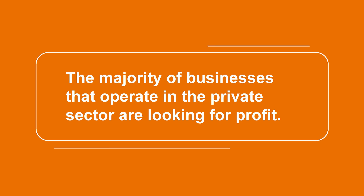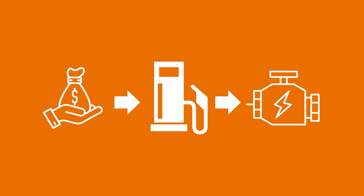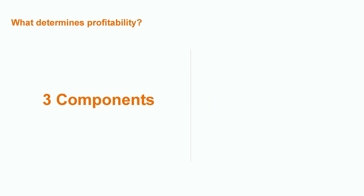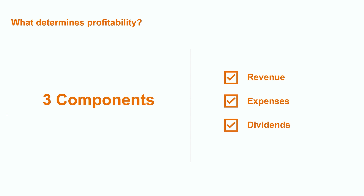Now, we know the majority of businesses that operate in the private sector are looking for profit, and the way that they manage their revenue and expenses will ultimately determine how profitable they are. Profit is the fuel that keeps the engine of the business running. Just like in the automotive industry, if we want to keep the engine operating smoothly, we need to have a general understanding of the individual components. If we were to look under the hood of a business, some of the most important nuts and bolts that would need the most attention would be the company's revenue, expenses, and dividends. So let's pop open that hood, take out our accounting tools, and get to work.